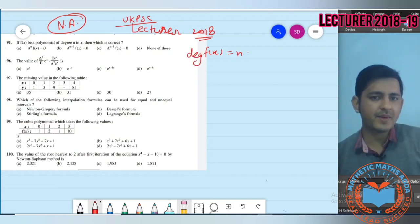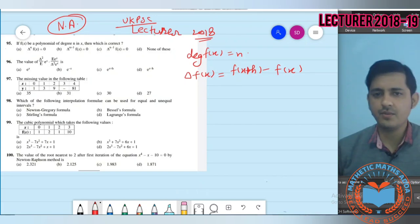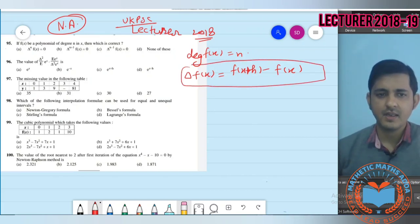And if we talk about forward operator, del f(x) is given to you as f(x+h) minus f(x), where h is the difference. If we minus the next value from the previous value, then it becomes a forward difference. This is a forward difference.